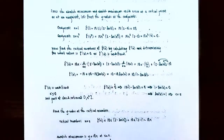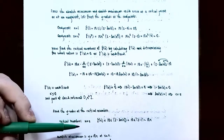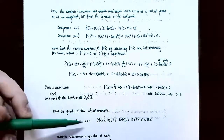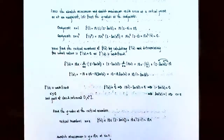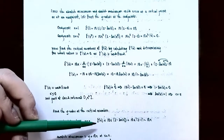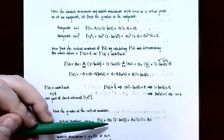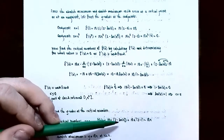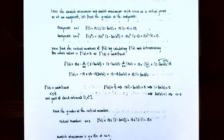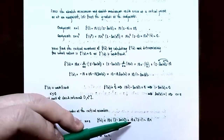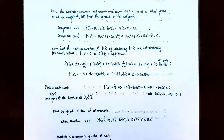Now plug x = e back into the original function to find the y-value. f(e) = 10(e)(2 − ln e) = 10(e)(2 − 1) = 10(e)(1) = 10e. So the y-value is 10e whenever x = e.